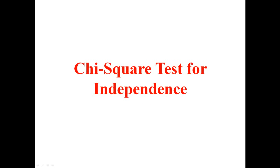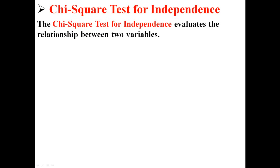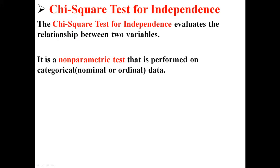Another kind of chi-square test is the chi-square test for independence. The chi-square test for independence evaluates the relationship between two variables. It is a non-parametric test that is performed on categorical data, that is, data that is measured on a nominal or ordinal scale.